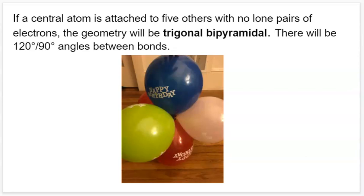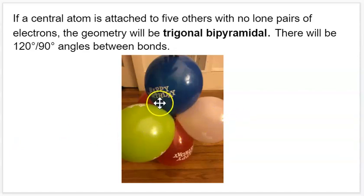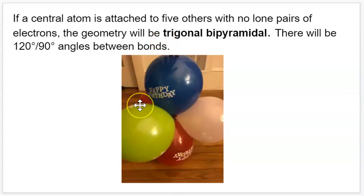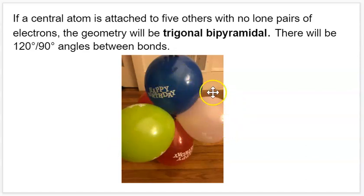If a central atom is attached to five others with no lone pairs, this geometry is called trigonal bipyramidal. We have a trigonal planar arrangement in the middle with three atoms at 120-degree angles, plus one directly above and one directly below at 90 degrees from this central plane. It's called bipyramidal because there's a pyramid on either side of this middle linear plane.